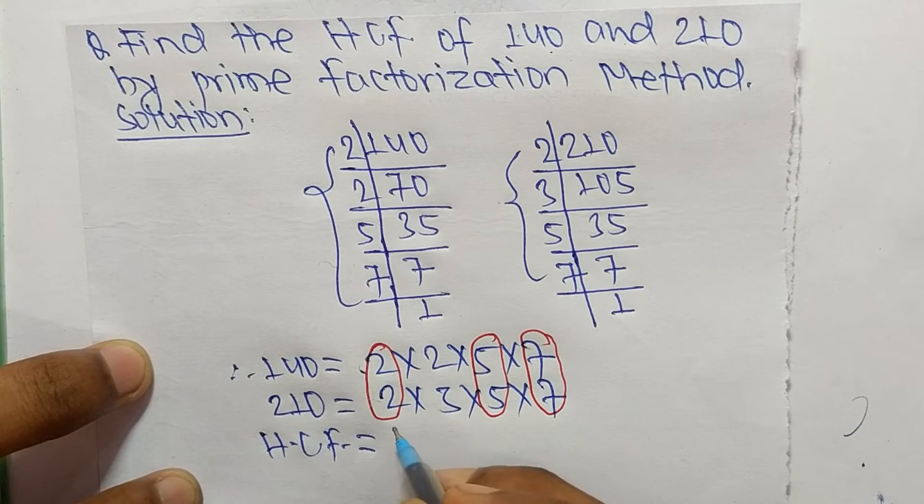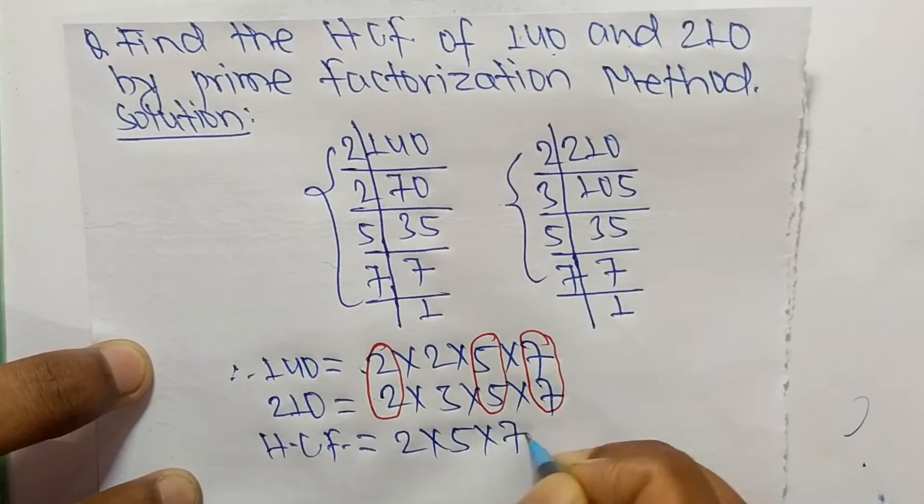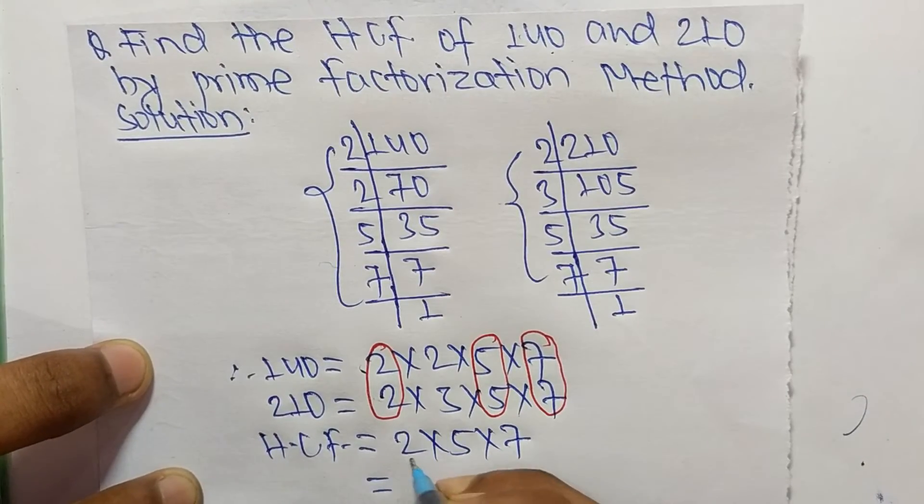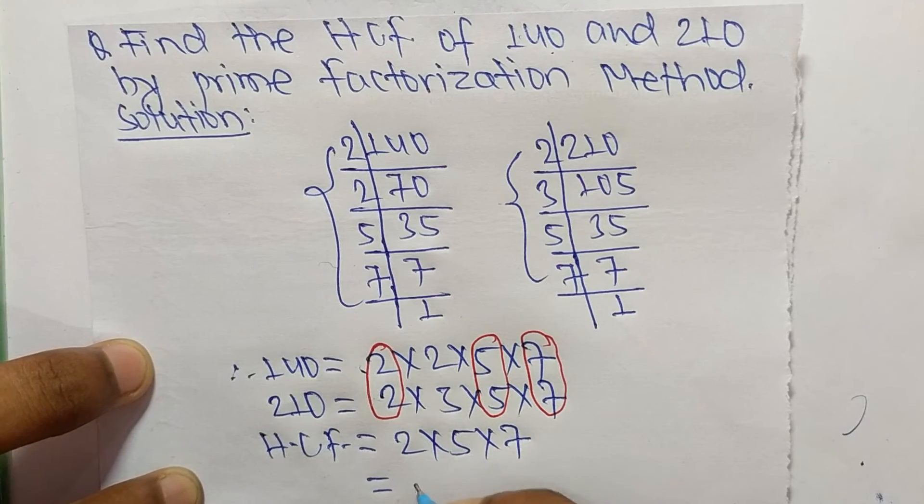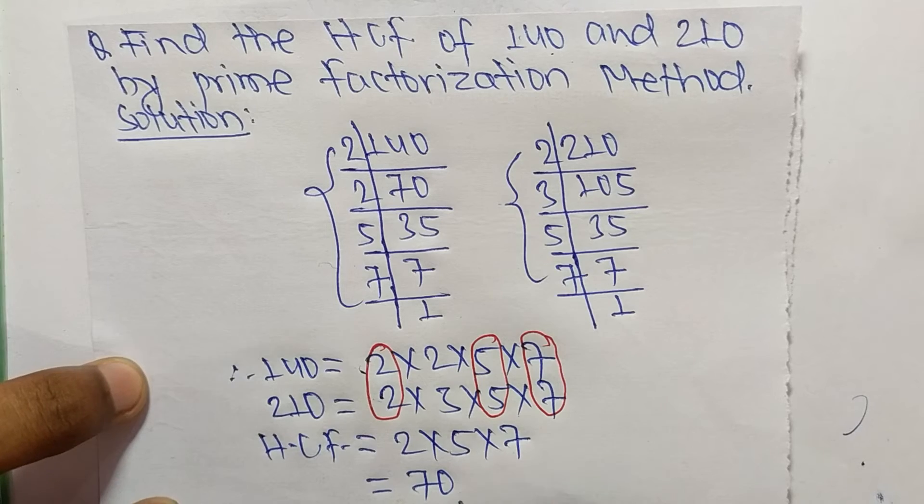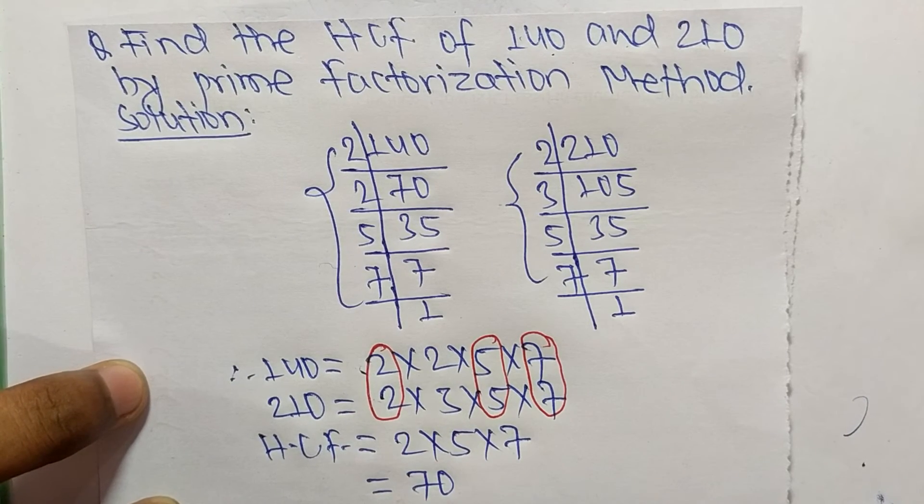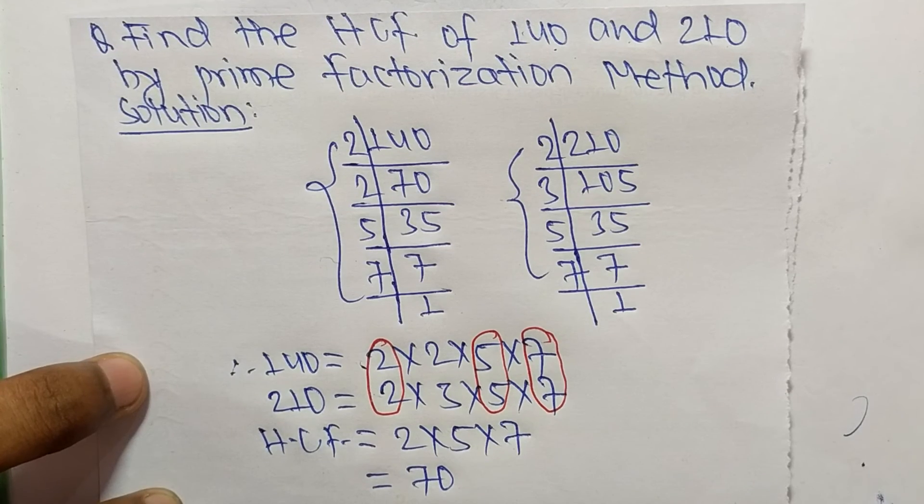So it is 2 times 5 equals 10, and 10 times 7 equals 70. Therefore, 70 is the HCF of 140 and 210. That's all for today, and thanks for watching.